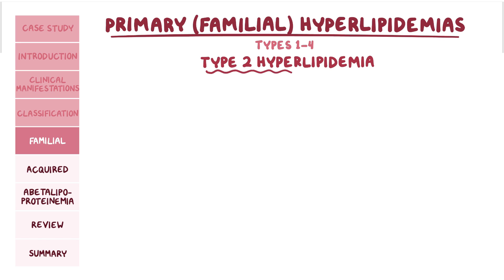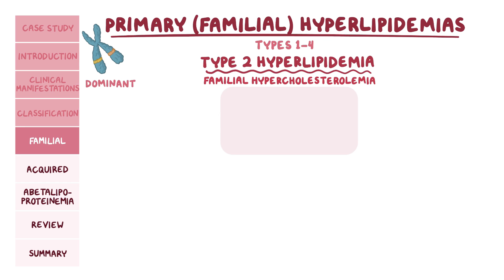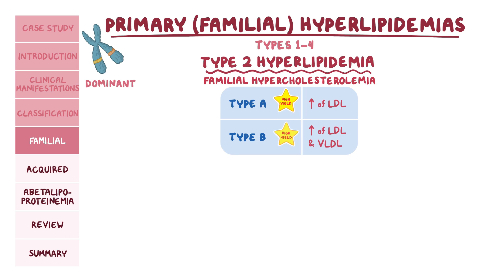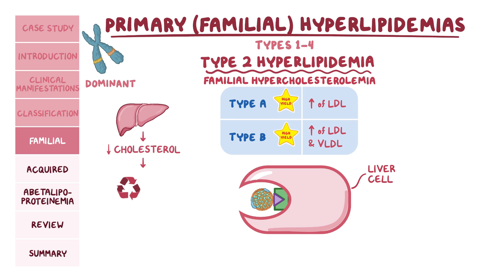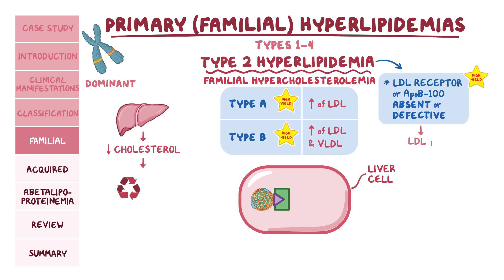Type 2 familial hyperlipidemia is an autosomal dominant condition, also known as familial hypercholesterolemia. It's characterized by the elevation of LDL cholesterol if it's type A, and both LDL and VLDL if it's type B. Normally, the liver can decrease cholesterol levels by recycling LDL in the blood. LDL attaches to its own LDL receptor on the surface of liver cells, and with the help of a protein called apolipoprotein B100, or ApoB100, it enters the liver cells. In this condition, either the LDL receptor or ApoB100 are absent or defective, causing LDL levels to go up.